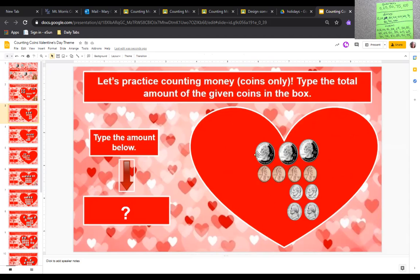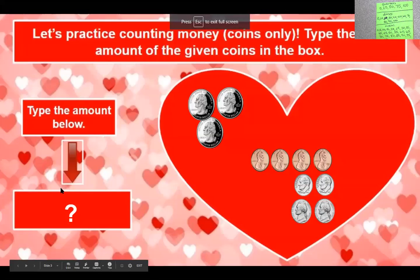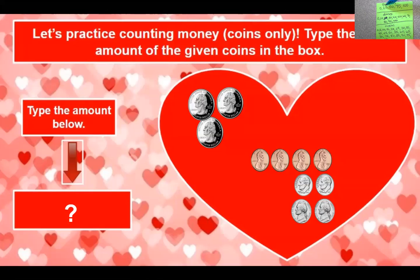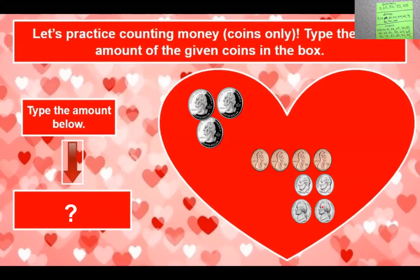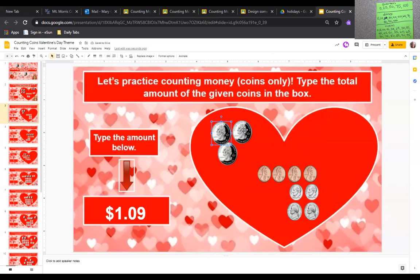For the next slide, the coins were kind of already arranged, but I was still able to grab them and move them around. For this slide I have three quarters: $0.25, $0.50, $0.75. Then count the dimes: $0.85, $0.95. Then go to the nickels at $0.05 each: $1.00, $1.05. Then the pennies: $1.06, $1.07, $1.08, $1.09. So the answer is $1.09 — click in the box, shift-4 for the dollar sign, type $1.09.